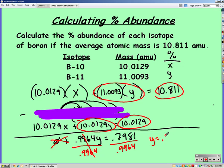So y is equal to 0.8009. But I want it as a percent, so make sure that you multiply by 100. Also define your x, or in this case y, by saying that's the percent of B11.